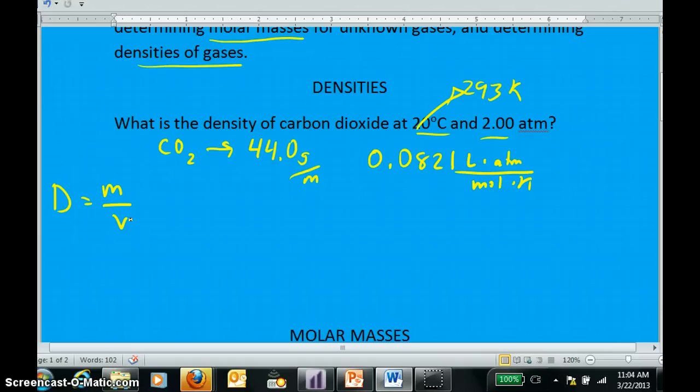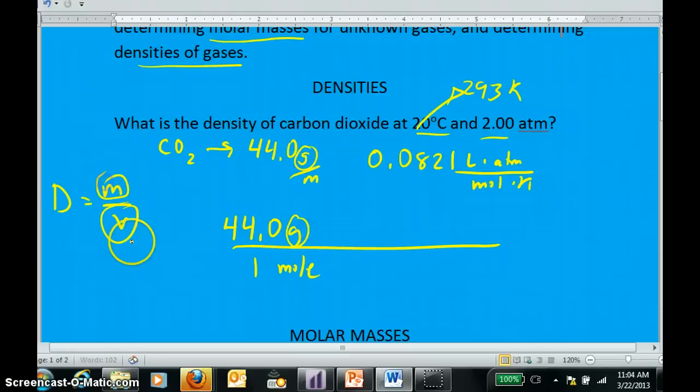Looking through all my data, the only place where I see a mass is right here, the molar mass. So I'm going to use that to begin the problem, 44 grams per 1 mole. But that doesn't account for the volume part that I need. It accounts for the mass part that I need. But to account for the volume part in the denominator, I will need a volume.